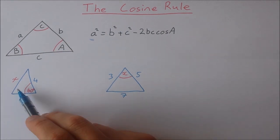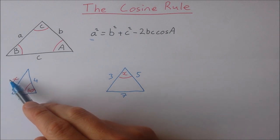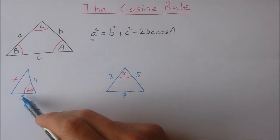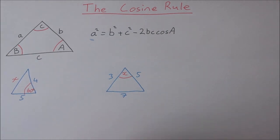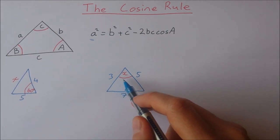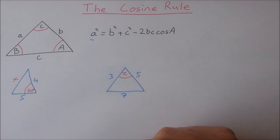So in the first case, when we want to find the size of an unknown side, we need the other two sides and the angle between them. In the second case, when we want to find the size of an angle, we need the size of the three sides.